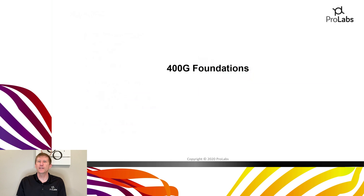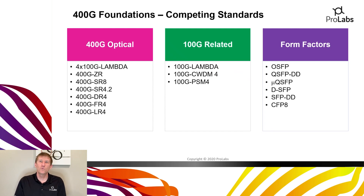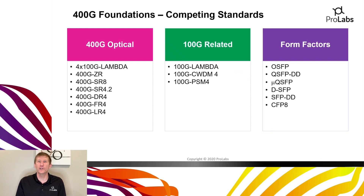Looking at our 400Gig foundations, we really want to talk about the hows and whys of why things developed the way they did. As the 400Gig standards were developing, there were quite frankly a lot of competing standards at work — optical standards, how those were going to work out, how this would roll down to 100Gig. There were also multiple form factor candidates: OSFP, QSFP-DD, MuQSFP, DSFP, SFPDD, and CFP-8 were all in the queue for 400Gig.